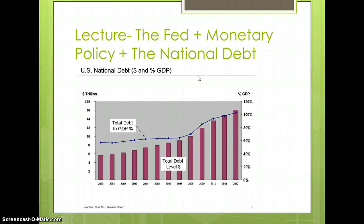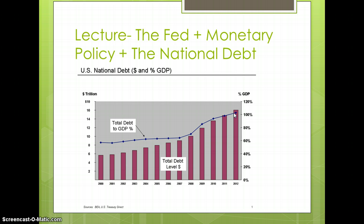Our lectures for the next couple days are going to focus on what is the Fed, monetary policy, and the national debt. We'll be looking at this graph and trying to explain why our aggregate demand, or GDP, and our national debt — we see the line here — why today we live in a society in America where our national debt is actually threatening to pass and is about even with our GDP.